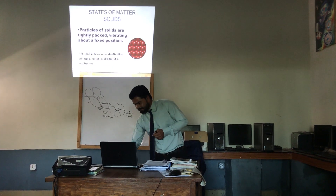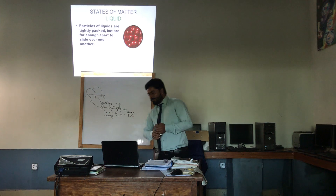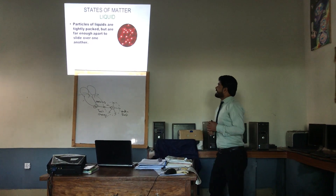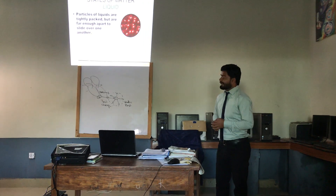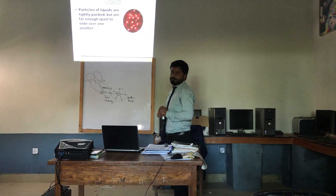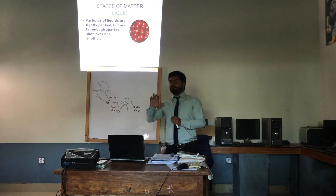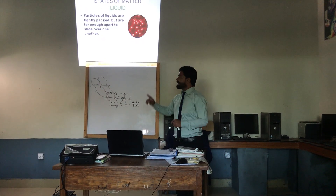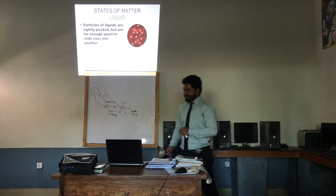The second state is liquid. The liquid particles flow past each other, and there is a small empty space between the particles of the liquid. They move from one place to another, so liquid has a definite volume but no definite shape.